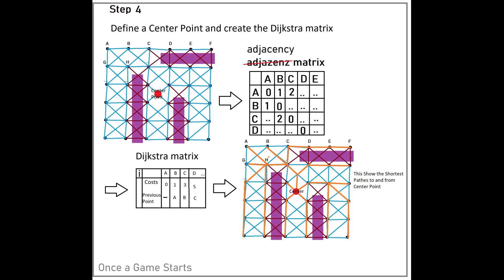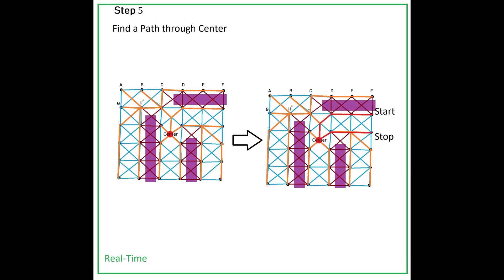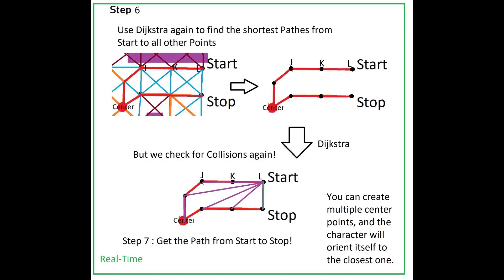Now let's discuss what happens at runtime. Step 5: Find a Path Through Center from the Dijkstra Matrix. Step 6: Use Dijkstra again on the found path points. Perhaps you don't have to walk the whole path through the center — the Dijkstra Matrix tells us the shortest path to all other points from a start point. Because we already limited the points by earlier operations, this can happen in real time.